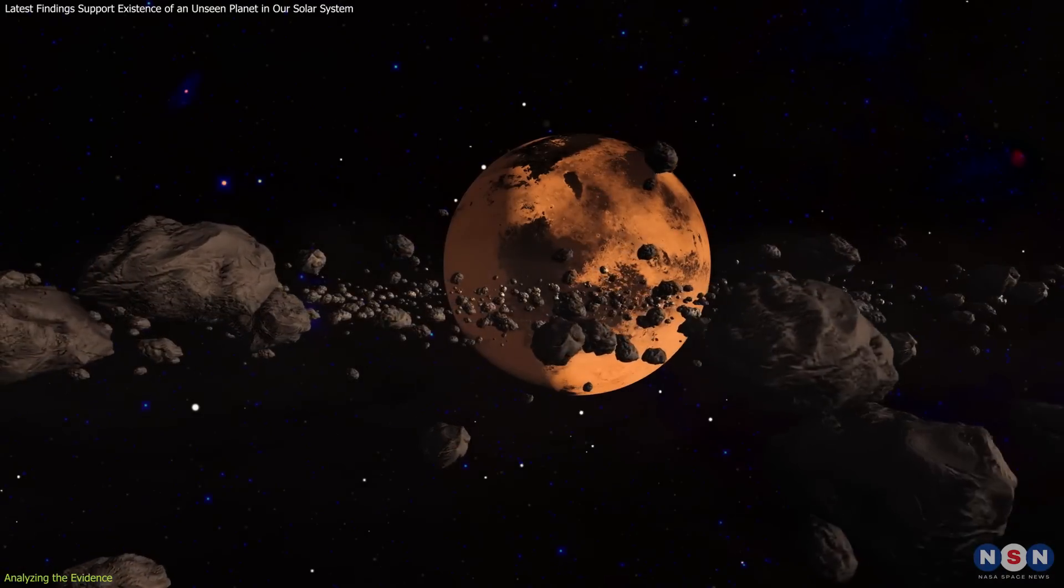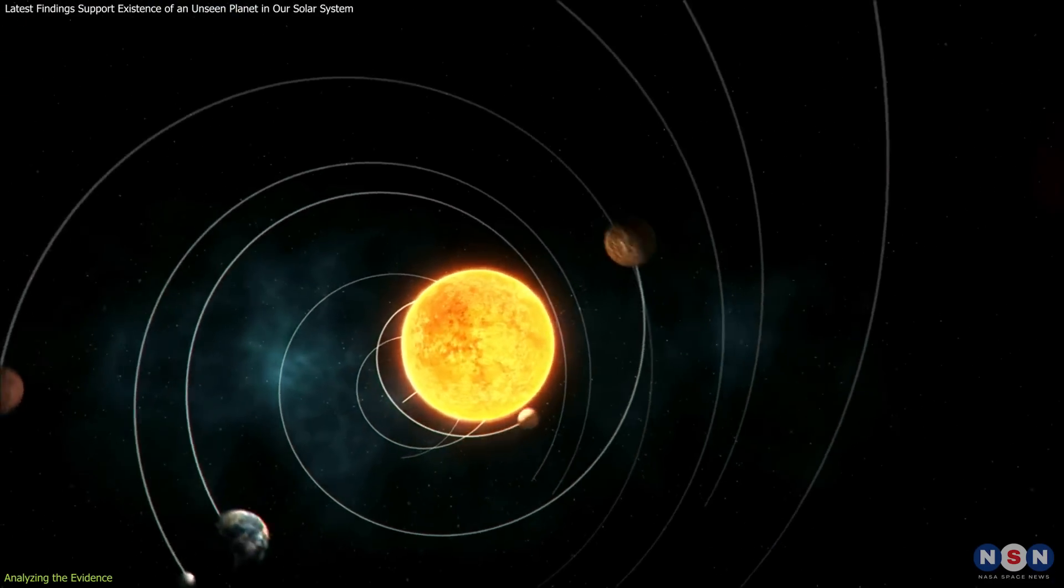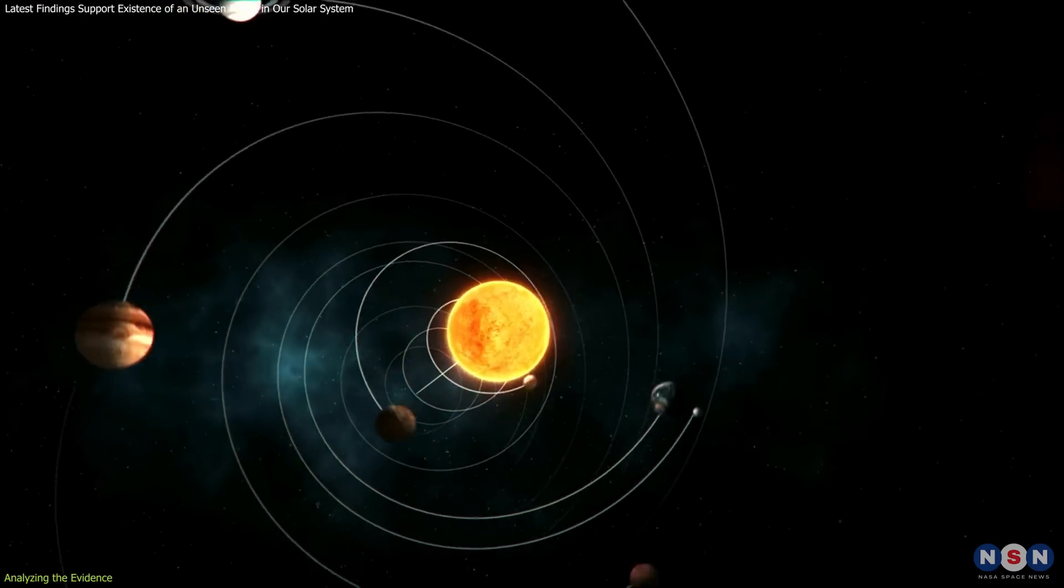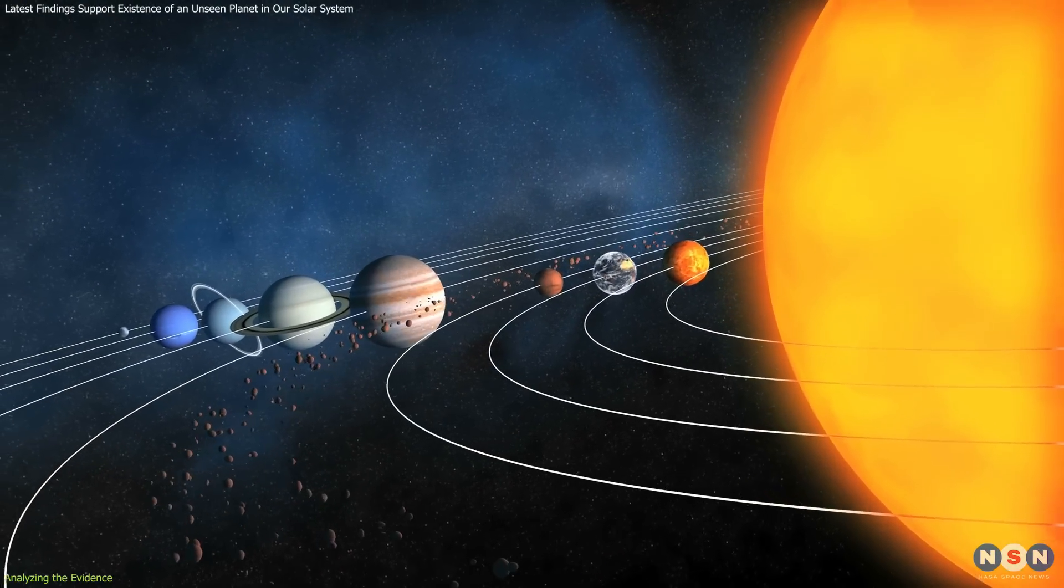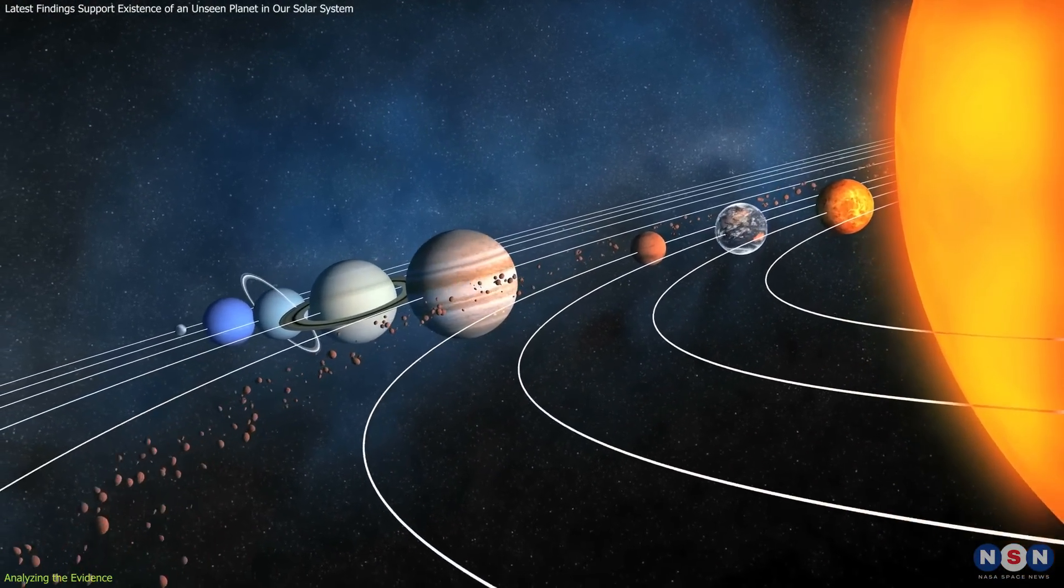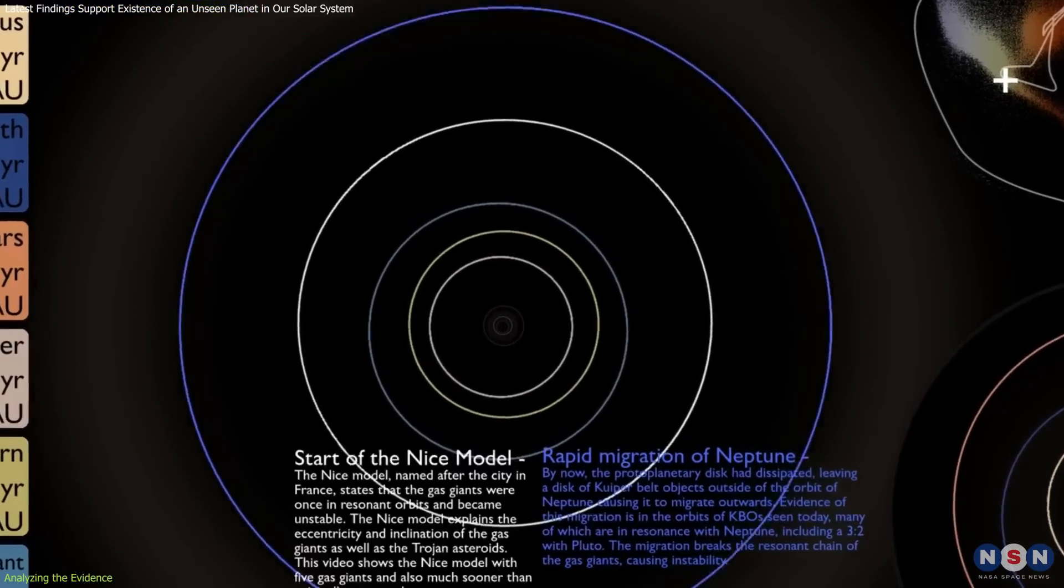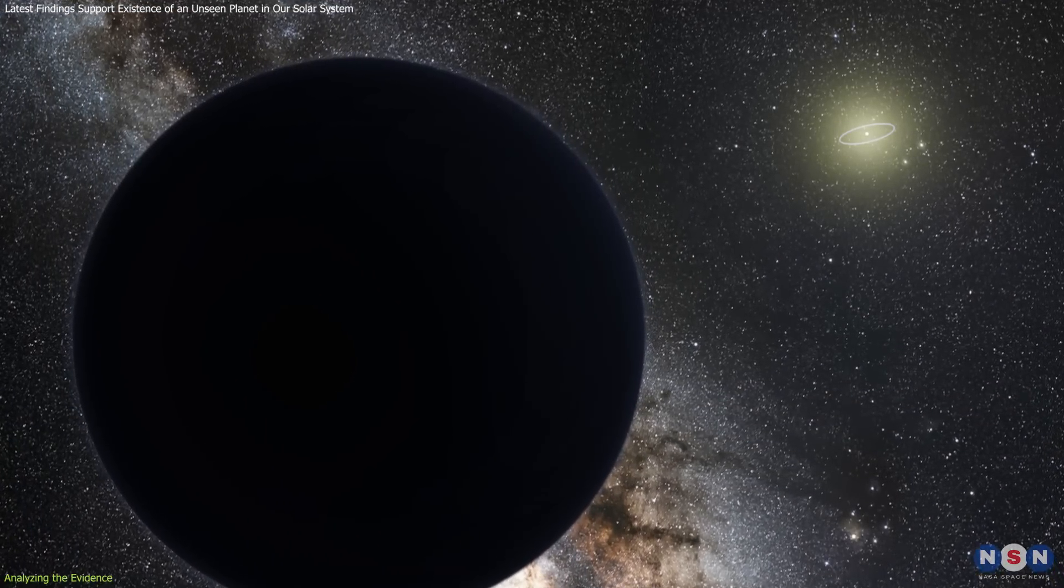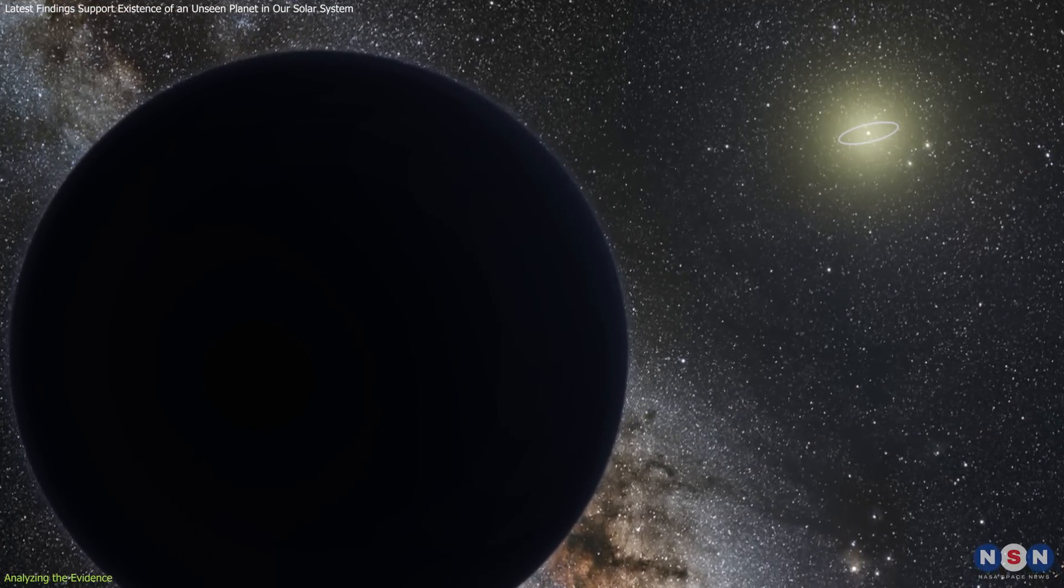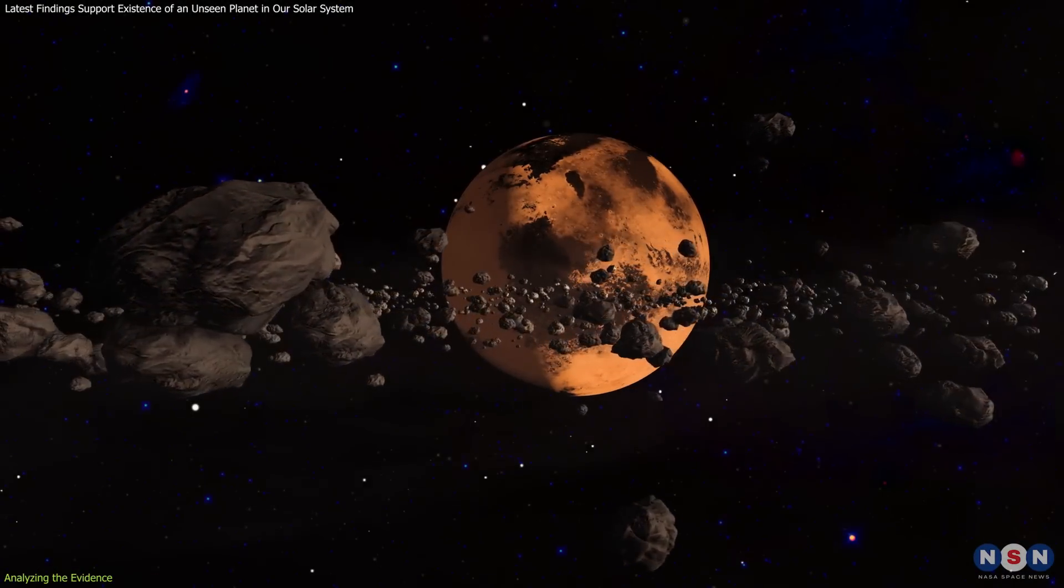To better understand how a single planet could cause such dramatic effects, scientists use computer models that simulate the solar system's dynamics. These models include both the known planets and any theoretical ones like Planet 9. By inputting data like the masses, starting positions, and speeds of these celestial bodies, the simulations can show how their gravitational forces might interact over millions of years. Time and again, these models have shown that a planet with the characteristics predicted for Planet 9 could be responsible for the unusual orbital patterns observed in these distant objects.